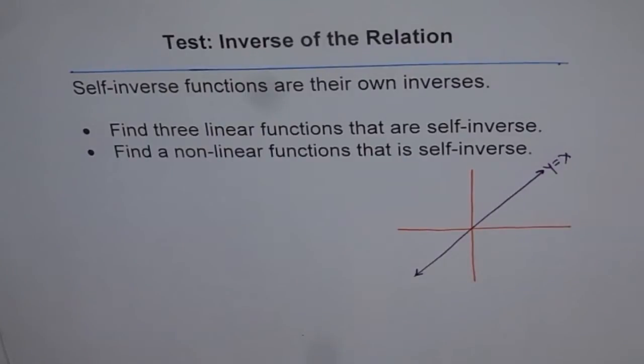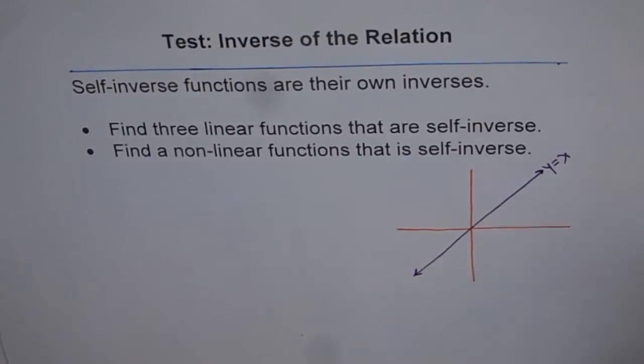And you also saw that there are many invariant points. Invariant points are those points which do not change. Now, let us say we have a function which has all points as invariant. Then, the inverse of that function will be the function itself.